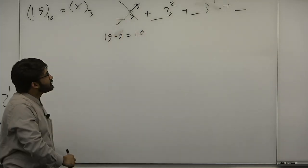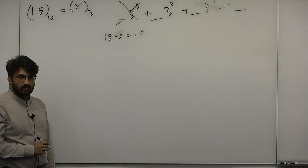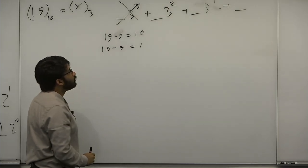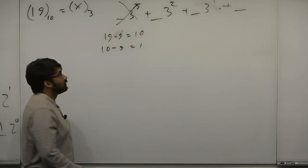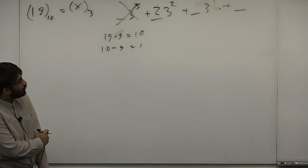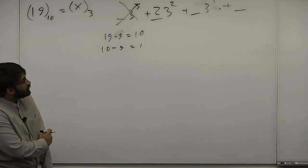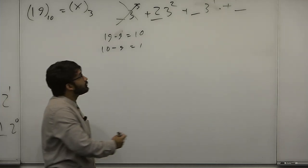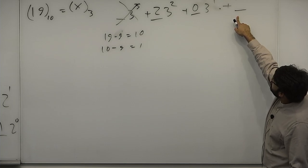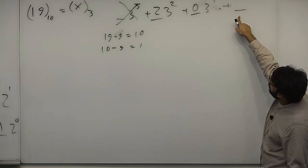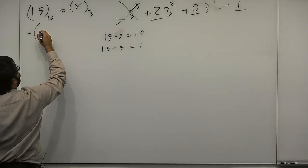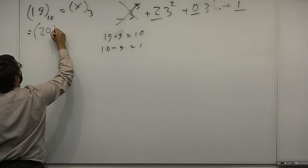But actually, we can subtract another 9 from there. Right? So we can actually put 2 nines into 19. So we put a 2 here. Now we have 1 left over. How do we put... 3 to the 1 is 3. It's too big. 3 is bigger than 1. So we put a 0 here. And then we have the last value here. This is going to be just our 1. So we see that 19 in base 10 is equal to 201 in base 3.